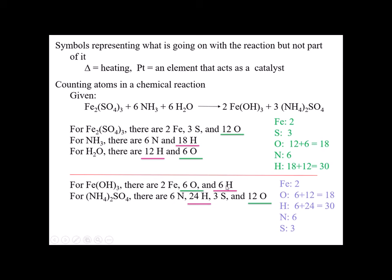Hydrogens also come from two places: six from iron(III) hydroxide and 24 from ammonium sulfate, so six plus 24 gives me 30. Nitrogen is from only one place: six. Sulfur is from only one place: three. In a balanced reaction you'll notice two irons equals two irons, three sulfurs equals three sulfurs, 18 oxygens equals 18 oxygens, six nitrogens equals six nitrogens, and 30 hydrogens equals 30 hydrogens — all atoms are the same on both sides.